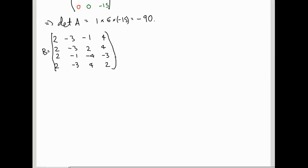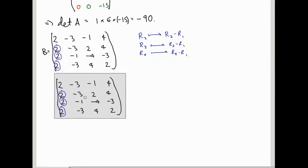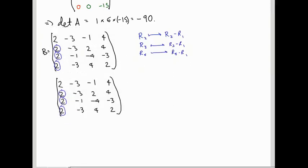Ok so again I can do row operations to turn this into something in echelon form, so first I've got to get rid of this mass of 2's on the left hand side. So I'm going to do row 2 goes to row 2 minus row 1 and the same for row 3 and 4. And you know rather than watching me do this you should just do it for yourselves and fast forward and see if you got the right answer.